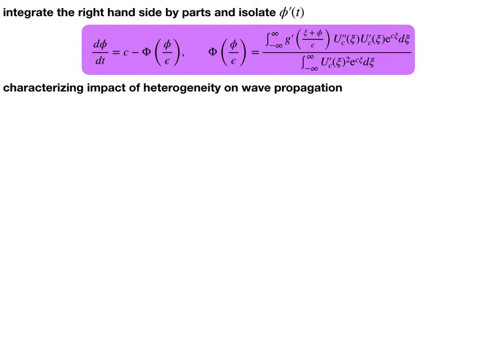At order epsilon we have d-phi/dt equals c minus a function we'll call capital Phi. This is still a nonlinear differential equation for phi, because phi appears inside. If capital Phi ever has amplitude above c, you should expect pinning — because if d-phi/dt becomes zero, you stop and reach a fixed point. So if capital Phi is large enough, propagation failure occurs. But this is way simpler than coding up some finite element method to solve that full nonlinear PDE system.